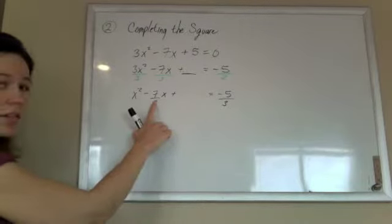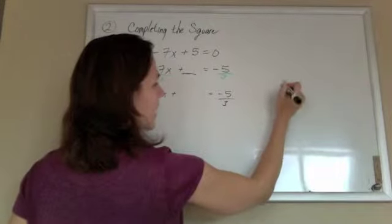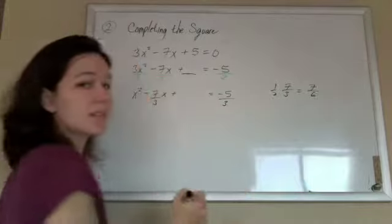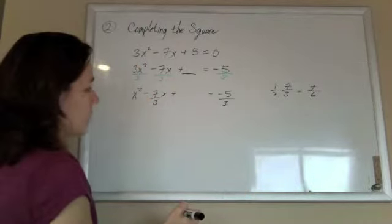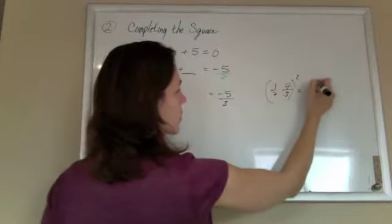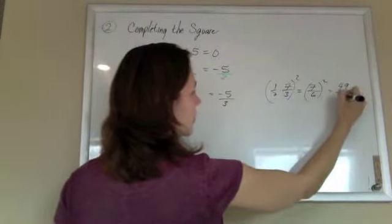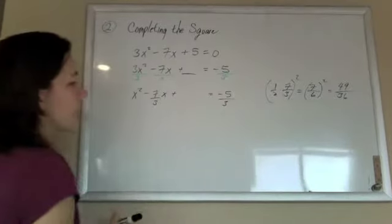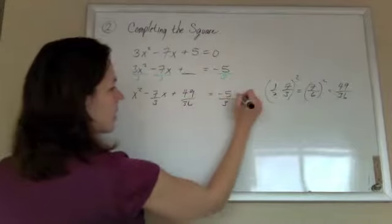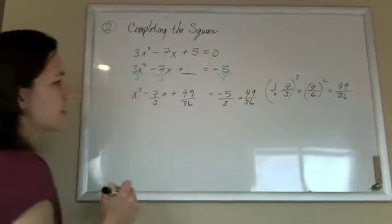And what I'm going to add is still going to be half and square that middle number. So if I want to half that, just divide it by 2. Basically, you're taking the bottom and multiplying it by 2, right? So if I want half of 7 thirds, that's going to be 7 sixths. So half of 7 thirds is 7 sixths. And I want to square that so I get 49 over 36.